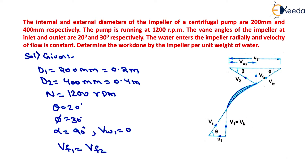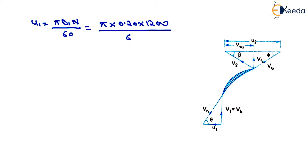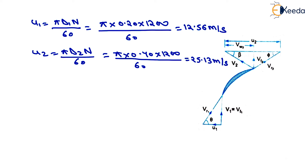Tangential velocity of the impeller at inlet: u1 equals pi times D1 times N divided by 60. Putting in the values — pi times 0.20 times 1200 divided by 60 — gives u1 equals 12.56 meters per second. Similarly, u2 equals pi times D2 times N divided by 60, which is pi times 0.40 times 1200 divided by 60, giving u2 equals 25.13 meters per second.